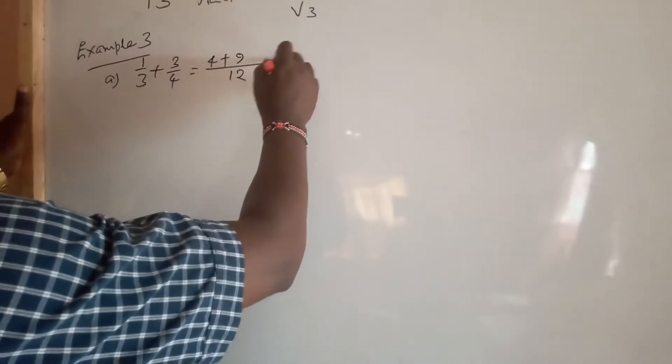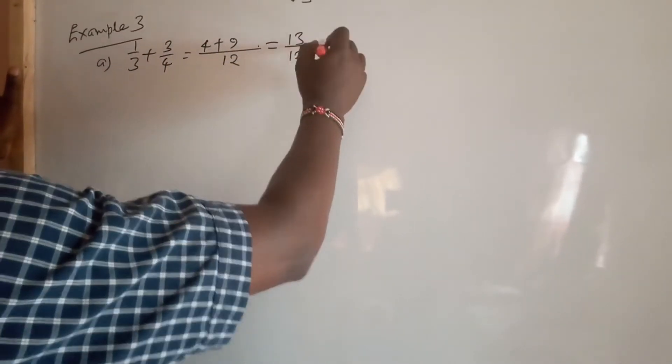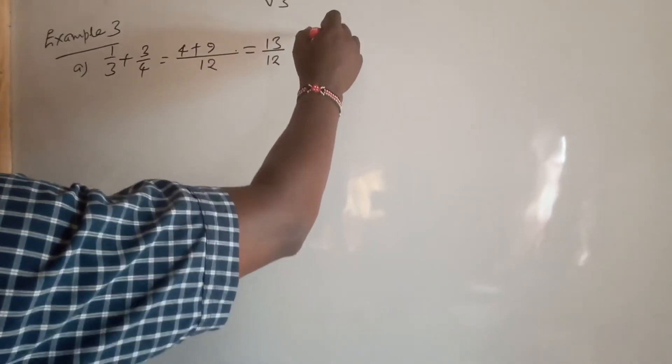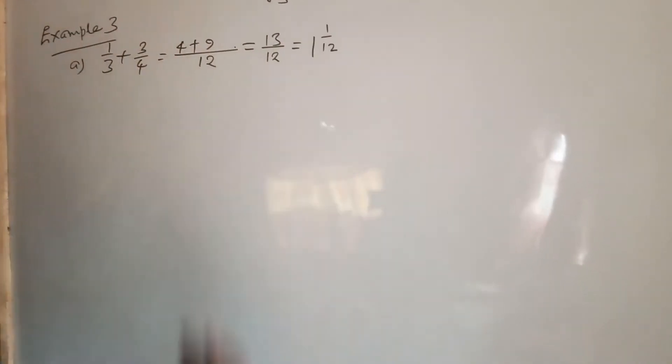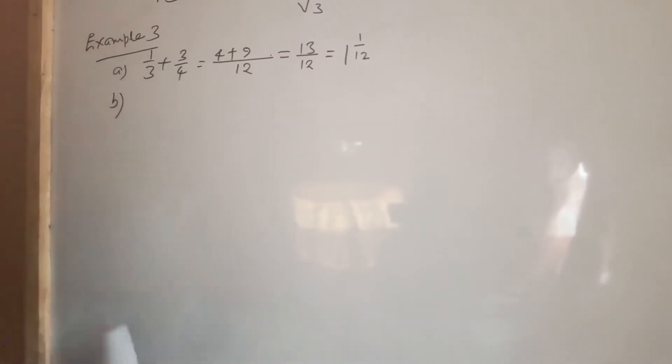This is 4 plus 9, which equals 13 over 12. You can write it as a mixed number 1 and 1/12, or you can use decimals. But let's look at part B.